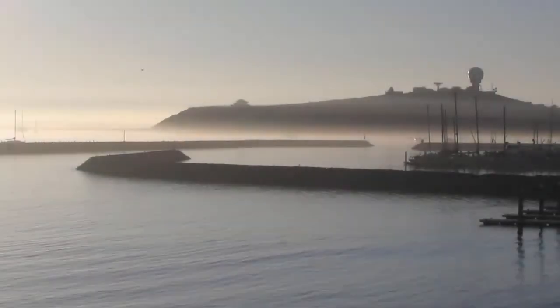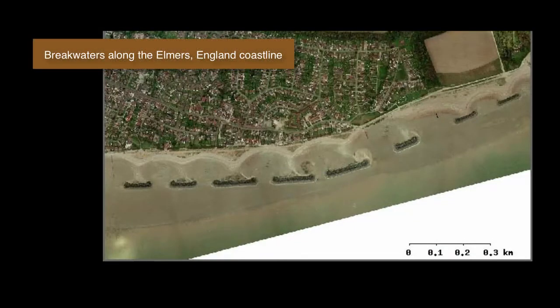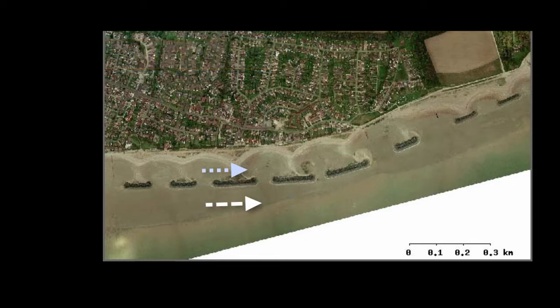We also have breakwaters — rock or concrete structures that run parallel to the coast but offshore. These are designed to absorb some of the wave energy and provide protection for anchored boats and harbors. Sometimes the longshore current is able to move on both sides of that barrier. Since the mainland side of the barrier tends to be more shallow, the longshore current will be slower and will unload any material that it carries. Soon we'll see the beach working its way toward the breakwater, very similar to how tombolos work.